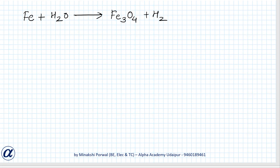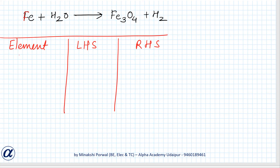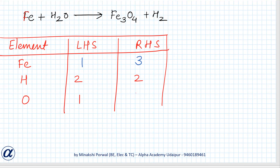To balance Fe + H2O → Fe3O4 + H2, first make a table of elements with number of atoms on LHS and RHS. Iron: LHS = 1, RHS = 3. Hydrogen: LHS = 2, RHS = 2. Oxygen: LHS = 1, RHS = 4.